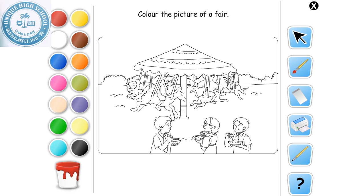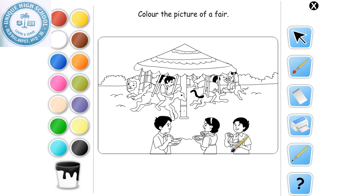Recreation Activity 1. Colour the picture of a fair. To colour, click on the brush tool and then click on a colour. Then click on the picture area you want to colour.